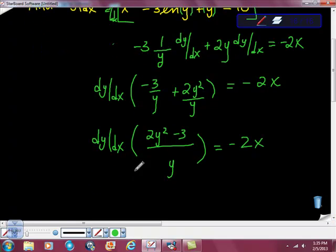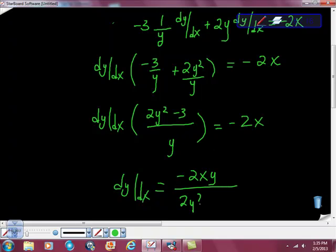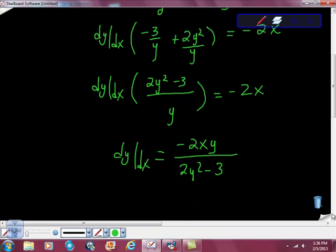Remember we need to solve for dy/dx, so I'm going to multiply by the reciprocal. I get dy/dx equals -2xy over (2y² - 3).